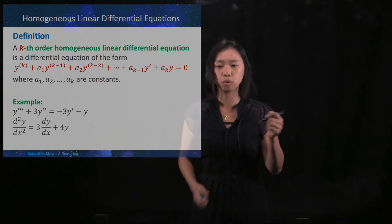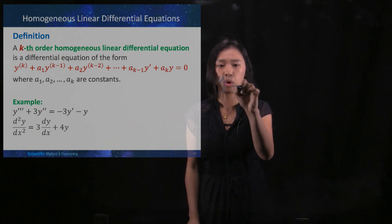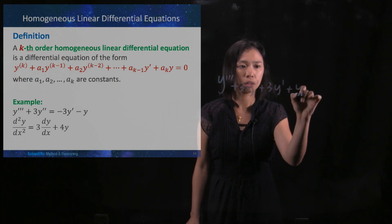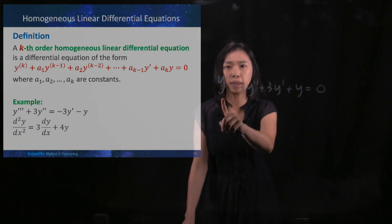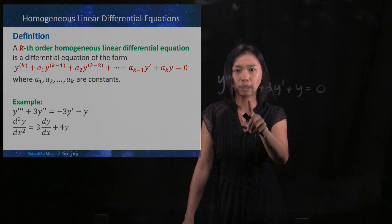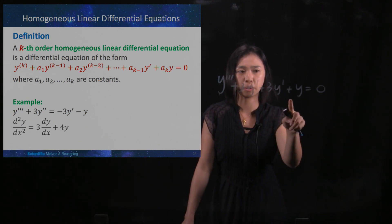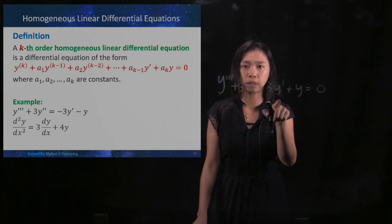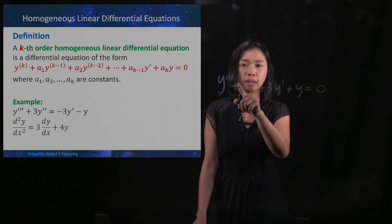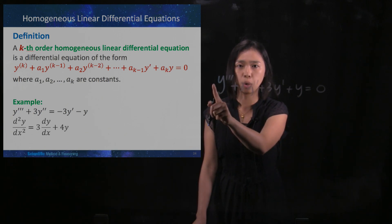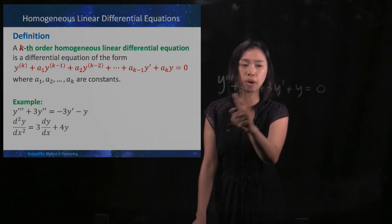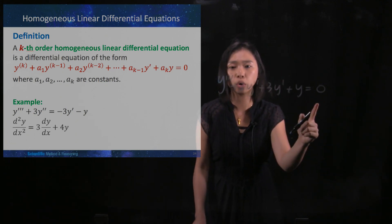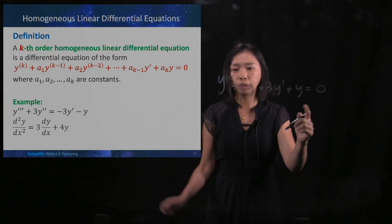We will take a look at two examples, starting with the first one. Moving all terms to the left-hand side, we have y differentiated three times, plus three times y differentiated two times, plus three times y differentiated one time, plus y, which equals zero. Every term is present: y, y', y'', and y''', all multiplied by constants one, three, three, and one. When they add up, they equal zero — no non-zero constant term. So this is a third-order homogeneous linear differential equation.